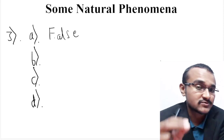The D question states: earthquakes can be predicted in advance. This is actually false. Because however much technology we have in this generation, we still cannot predict earthquakes. Even with seismographs, we cannot predict properly at which place and at which time an earthquake will happen. So the answer for D is false.